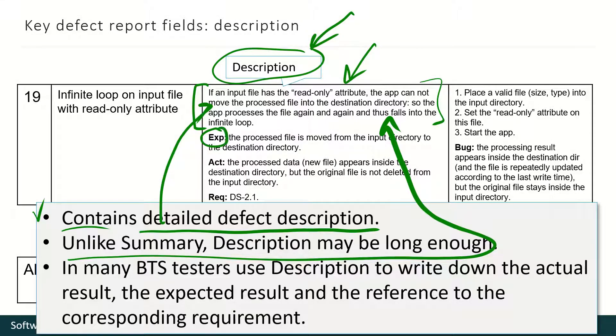It also contains expected result, actual result, and the link to a requirement that was violated by the defect. This link may sometimes be absent, but this is absolutely necessary. You should always provide expected and actual result. In some bug tracking systems, there may be special fields for this information, but in most ones there are no special fields, so use description.